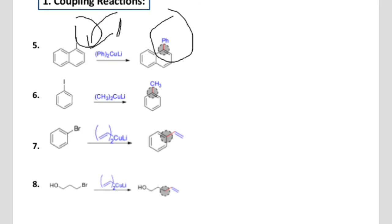Iodine acts as a leaving group and will leave, and the final group will be attached. Similarly, in the second example, in the replacement of iodine, the methyl group will be attached. It is a simple replacement reaction in which one group is replaced with another.